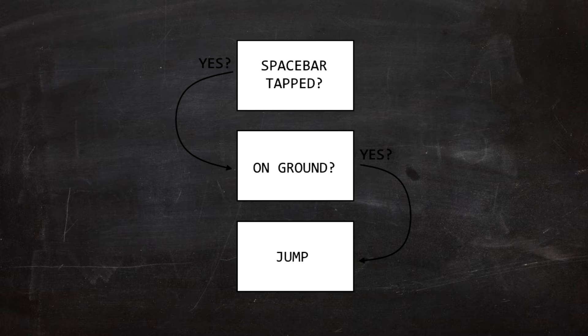There is also a flowchart version of pseudo code, but it's basically a lot more work. One pro is that if you look at it, it's way more easy to understand what's going on and what is happening, compared to the text version. So the next question we want to ask ourselves is: do we want to use the text version or the flowchart version?